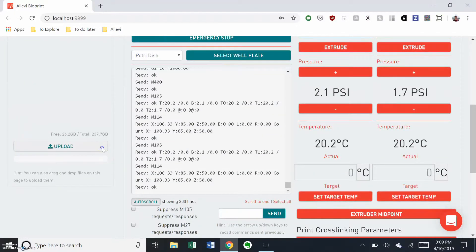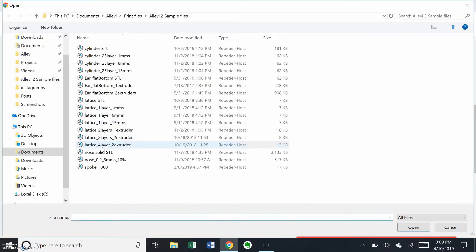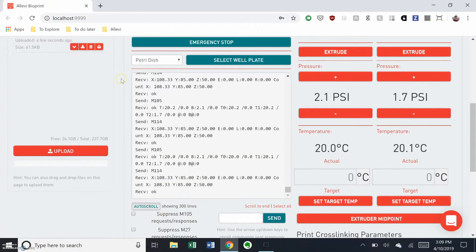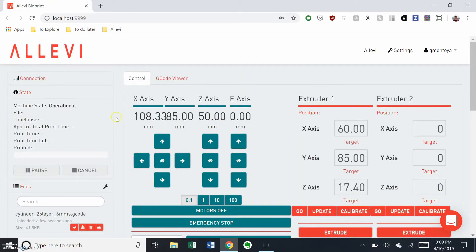In the software, upload your desired g-code file. Today we'll be using a 25 layer cylinder. Click load and print and watch your printer go.